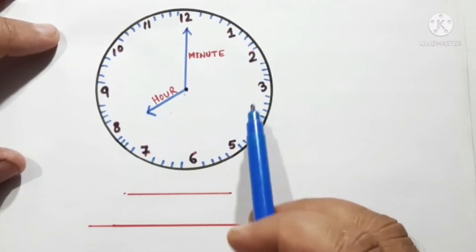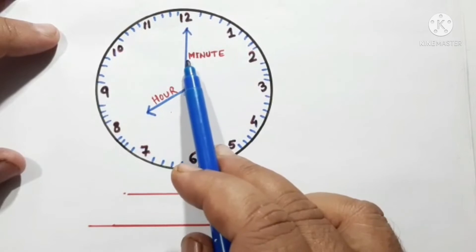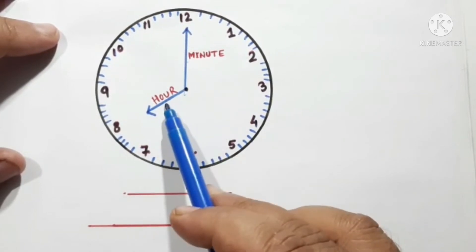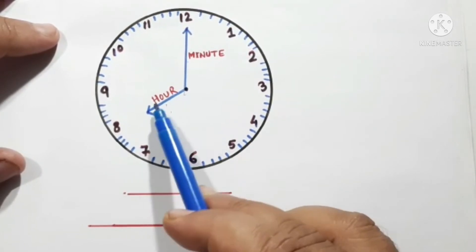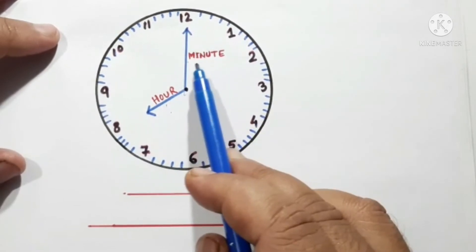Children, you can see this clock. It has two hands. These two are called hands. The shorter one is called hour. The longer one is called minute.